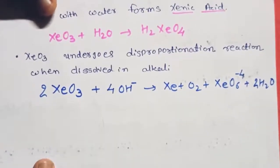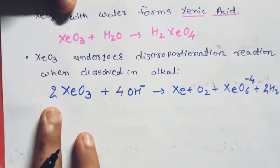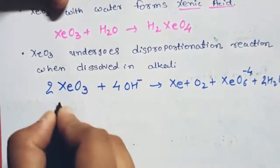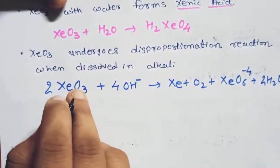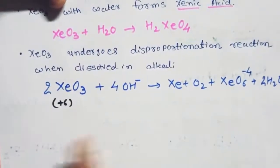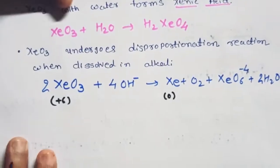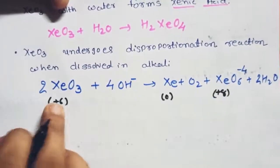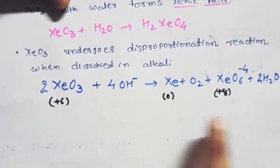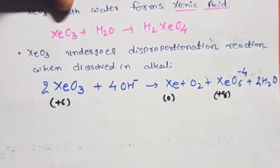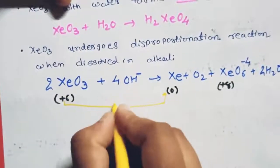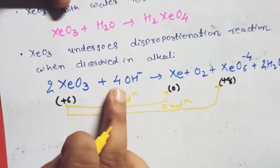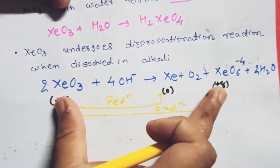In a disproportionation reaction, the same element undergoes both reduction and oxidation. In XeO₃, xenon has oxidation state +6. It reduces to 0 (Xe gas) and oxidizes to +8 (XeO₆⁴⁻). So xenon undergoes both reduction and oxidation in the same reaction.